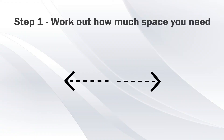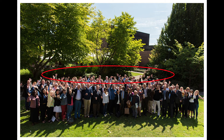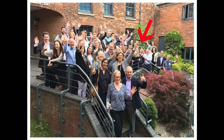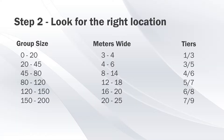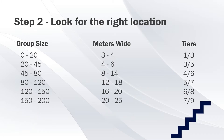Step number one: work out how much space you need. To avoid a squashed 'I can't see the people in the back' group photo, make your guests feel comfortable and equally visible. This table relates the group size to the approximate space required from left to right and how many tiers you will need to see everybody clearly.